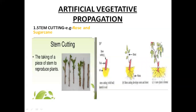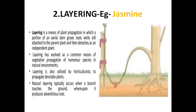Stem cutting is used to propagate plants like rose, sugarcane, and pineapple. The next method is layering. In this method, a lower branch of a plant is bent down close to the ground, as you can see in this picture, and covered with moist soil in such a way that its growing tip remains above the soil surface. After a few days, the covered portion of the stem usually produces roots. The rooted branch is then cut and grown as an independent plant. This method is used to propagate plants such as jasmine.